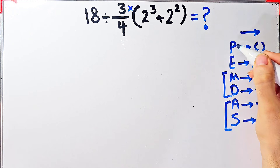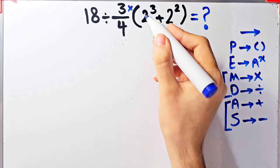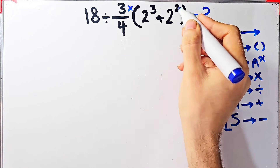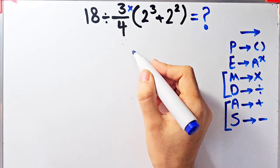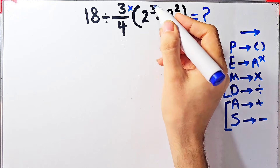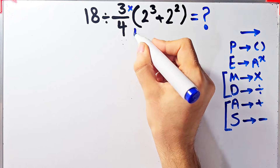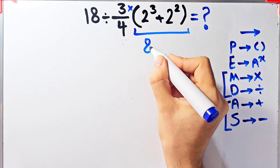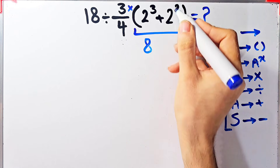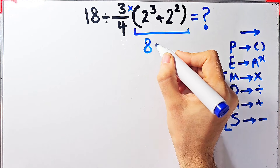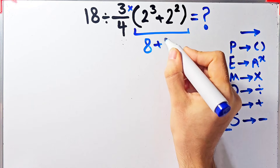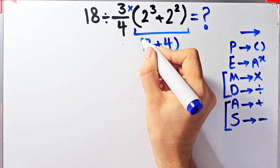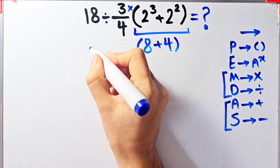Following PEMDAS, we simplify the parenthesis first. Inside we have 2 to the power of 3 plus 2 to the power of 2. 2 to the power of 3 equals 8, and 2 to the power of 2 equals 4.